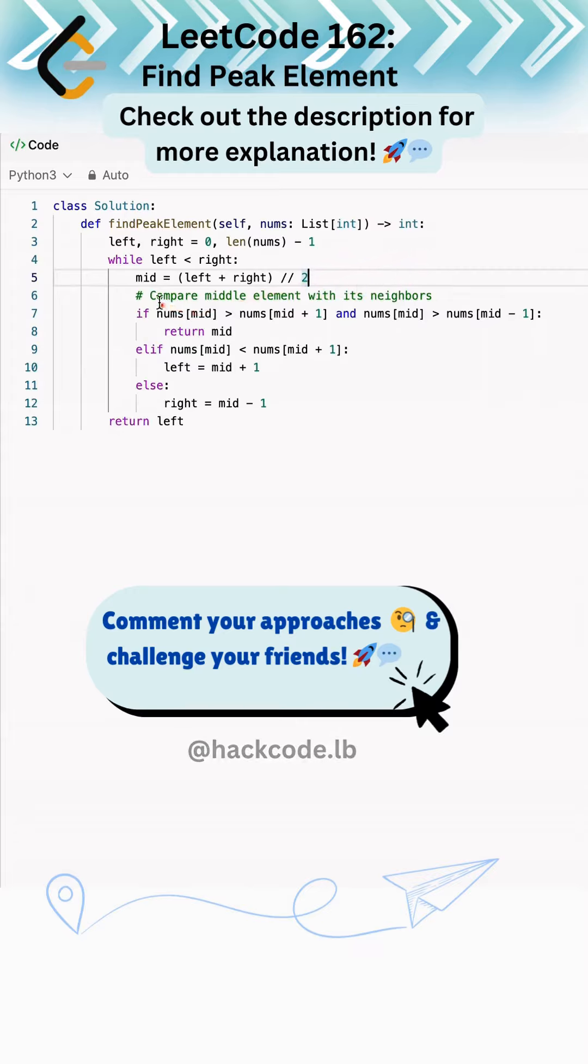We're comparing the middle element with its neighbors, basically left and right neighbors. If it is greater than both neighbors, we return mid because we want to return the index.